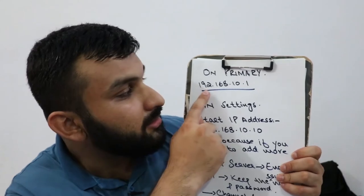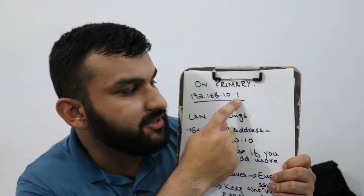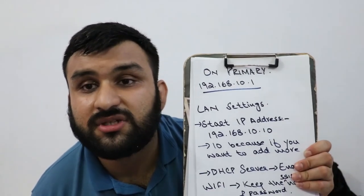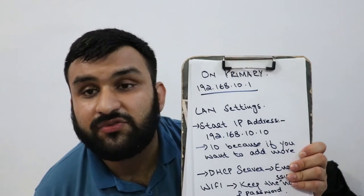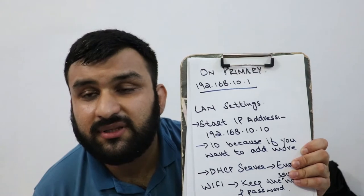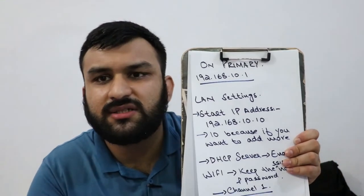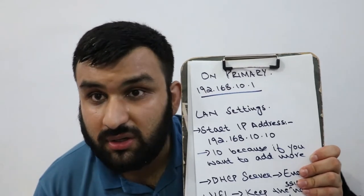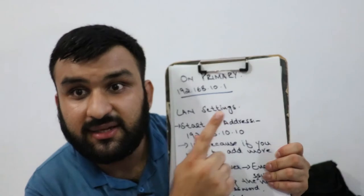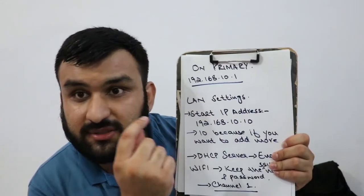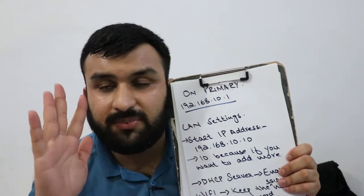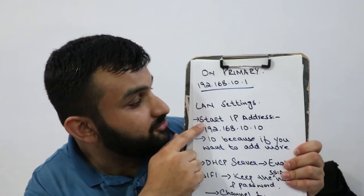Let's start with the primary router. Click on the default IP address 192.168.10.1 to log in to your router settings. If you don't remember your credentials, reset the router — the default login is typically admin/admin, or admin with no password. After logging in, go to the LAN settings, where you can redefine your IP address range.